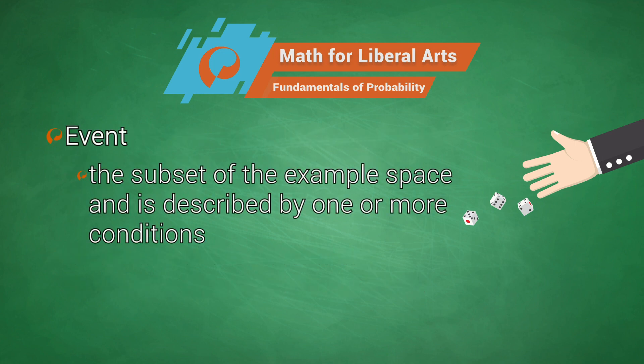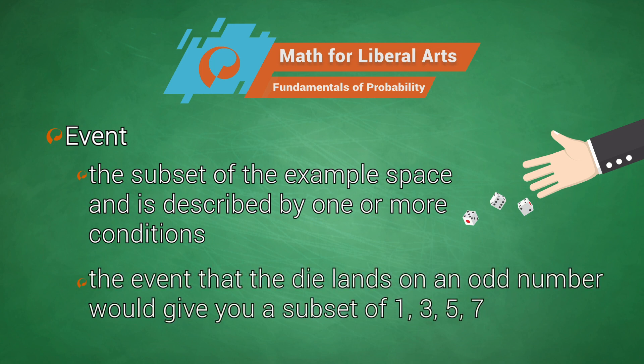An event is the subset of the sample space and is described by one or more conditions. For instance, the event that the die lands on an odd number would give you a subset of 1, 3, 5, 7.